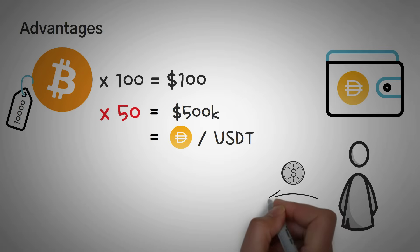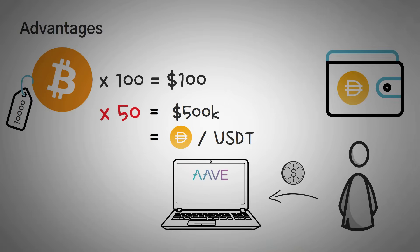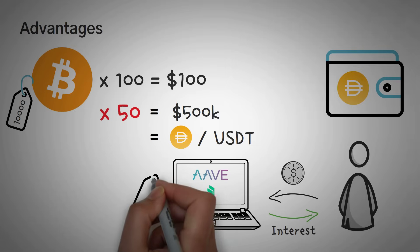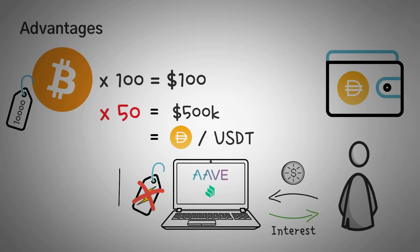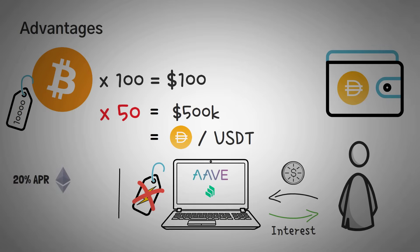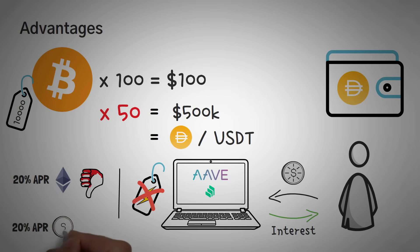Stablecoins are also beneficial when investing on platforms like Aave or Compound, where you can actually earn interest on your crypto assets, because you don't have to worry about the price fluctuations. 20% APR on Ethereum does not matter if Ethereum drops by half. However, 20% APR on your USDC stablecoin is delicious.